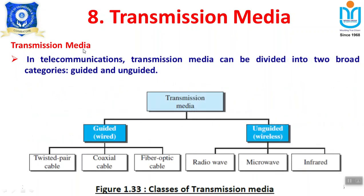Under this transmission medium, it is generally classified into two categories. One is called guided medium — all wired communications come under guided medium. The other is called unguided medium — all wireless communications come under unguided medium. In this video session, we are going to discuss only the guided medium: twisted pair cable, coaxial cable, and fiber optic cable.